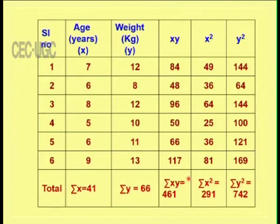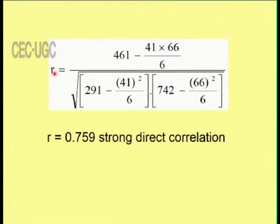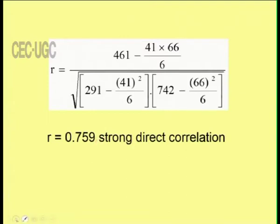By putting all values into the formula, we get r equal to 0.759. We have to consider two parameters: the sign and the value. The sign is positive, and the value is 0.759. As seen in the diagram, the value indicates a strong correlation and the sign indicates a positive correlation. Therefore, the correlation between age and weight is a strong positive correlation.